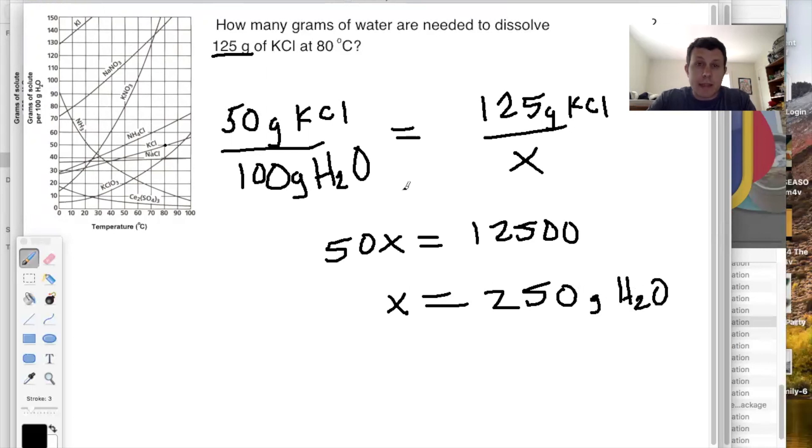And so again, this should make sense. If 100 can hold 50, 200 could hold 100, 250 can hold 125. So this is mainly proportions in reading these graphs.